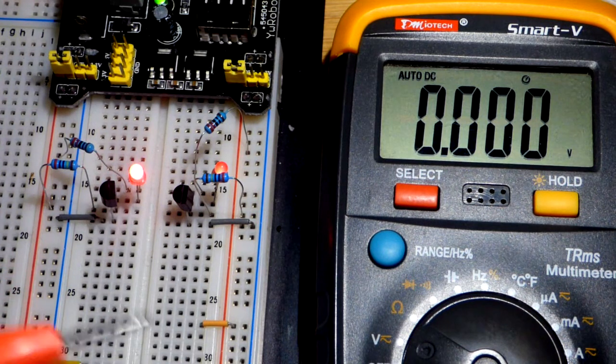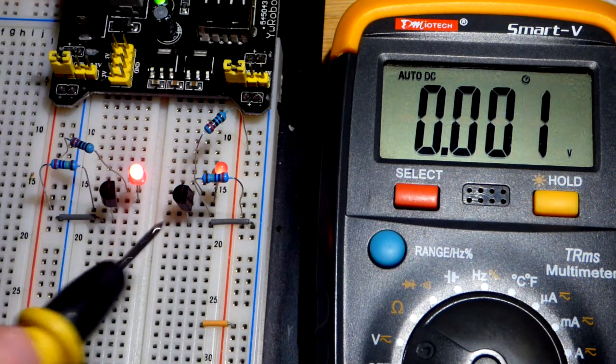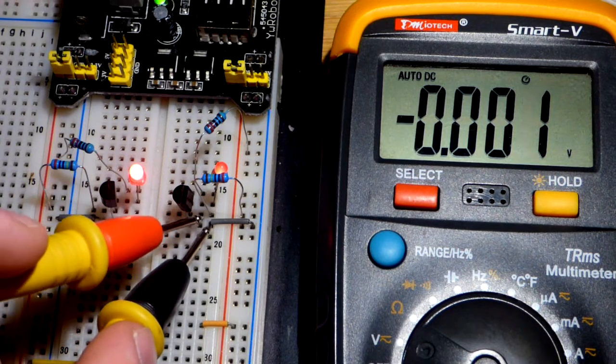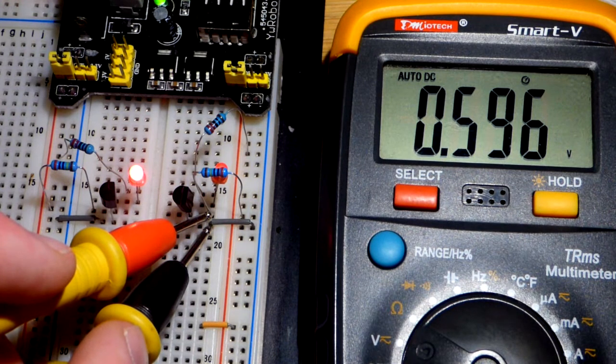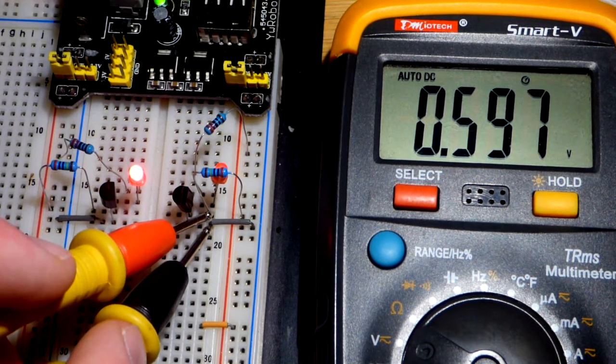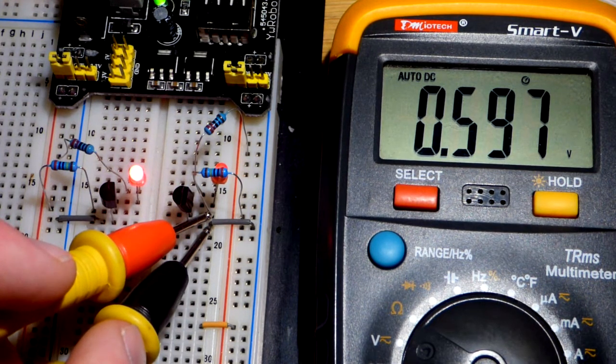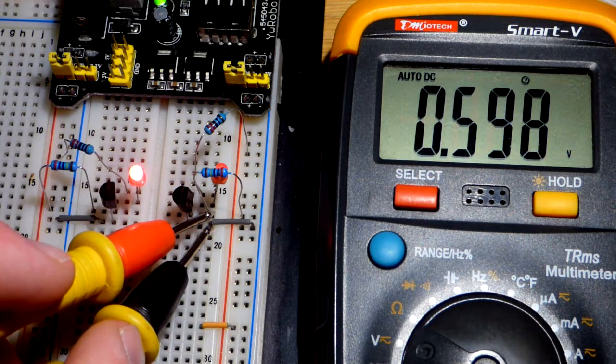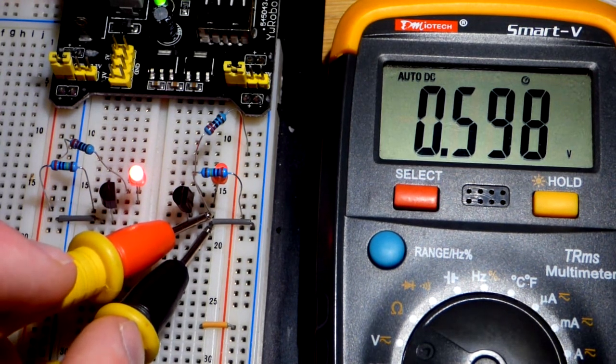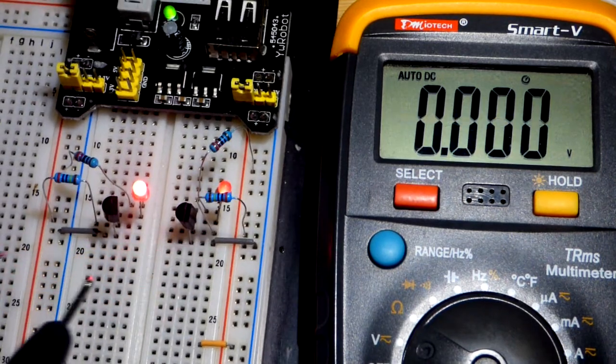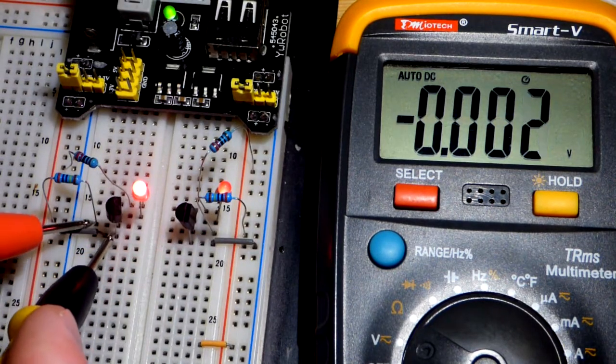But we'll see here that if we go to the base to emitter of the NPN transistor, it's about 0.6 volts. That's because there's very low current right now. If we used a lower value resistor, it would go up to about 0.7 volts if we get low enough. But it's 0.6, 0.7 volts in that range.